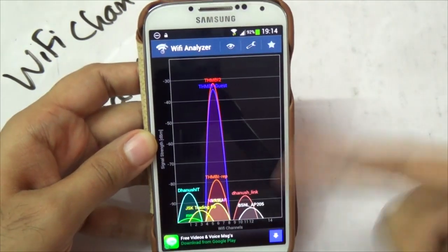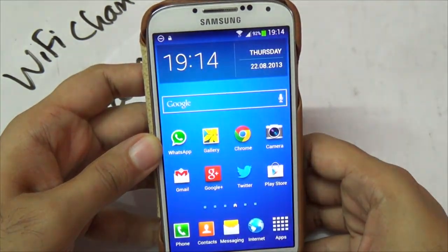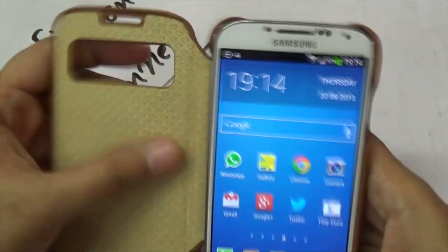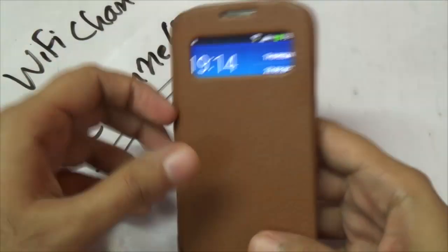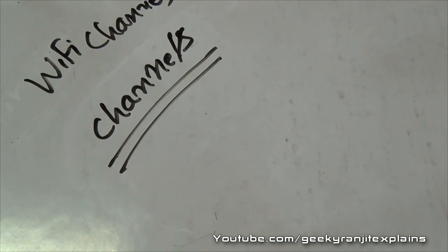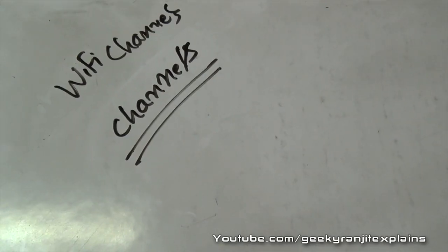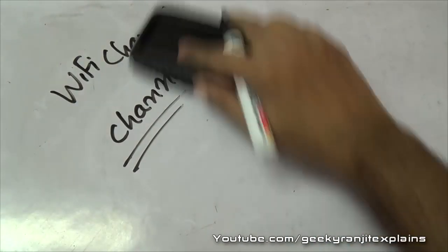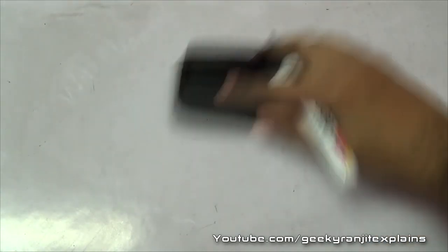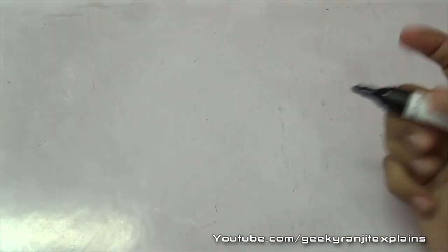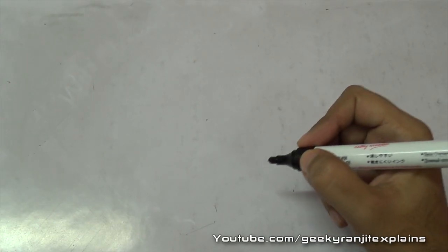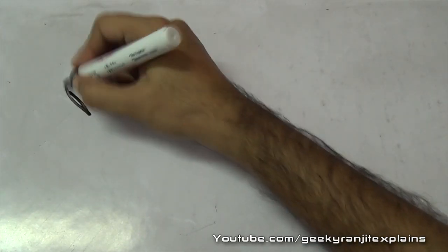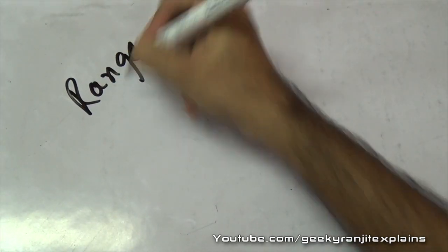Hence you can get a lot better Wi-Fi range and throughput with your network. The name of this app is Wi-Fi Analyzer and you can download it for free from the Android Play Store. Again, do select a channel which is least congested so that you get better Wi-Fi range and throughput on your network. That's Wi-Fi channels and it can dramatically improve the performance of your Wi-Fi network.